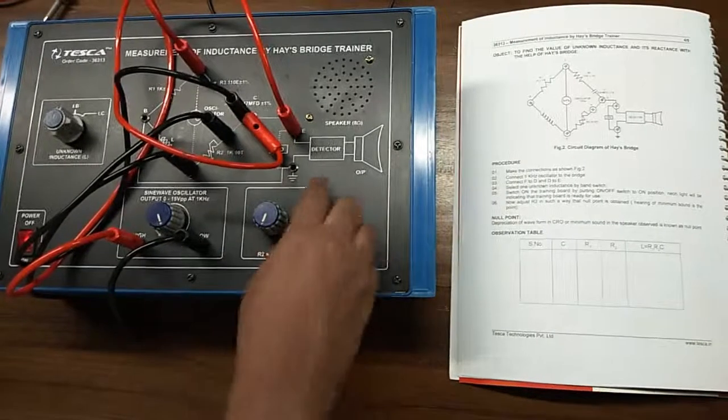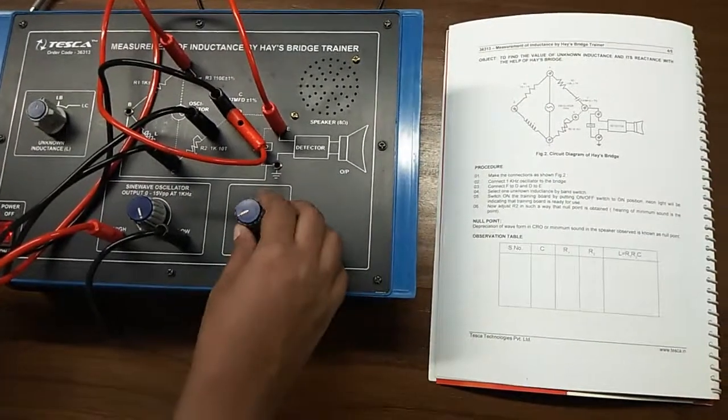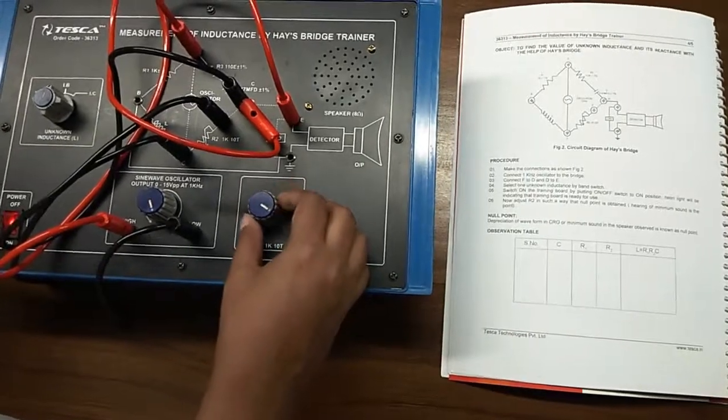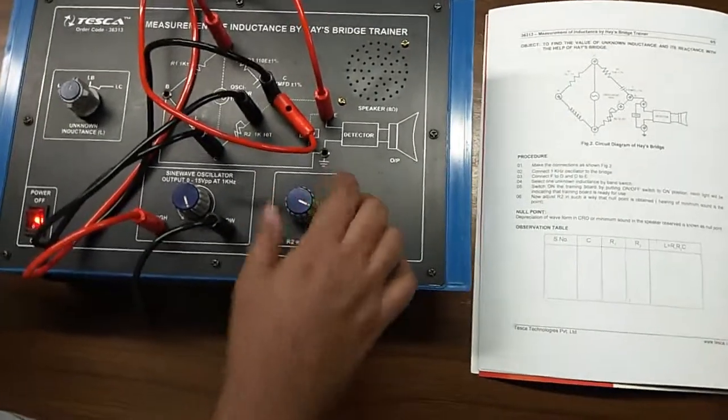Now turn on the kit and adjust this potentiometer till we get the minimum sound.